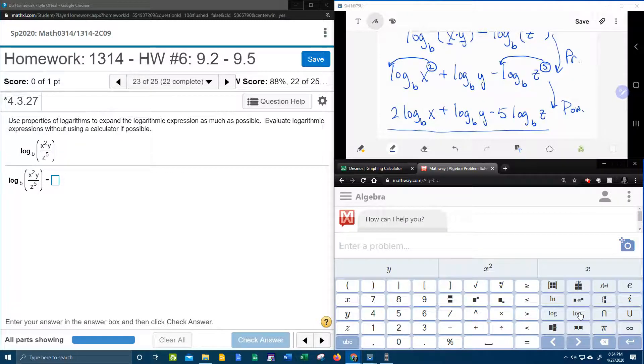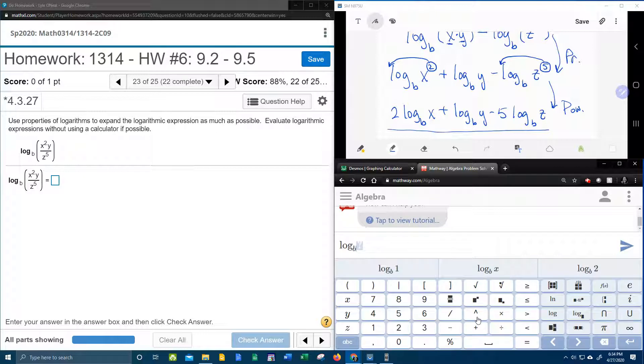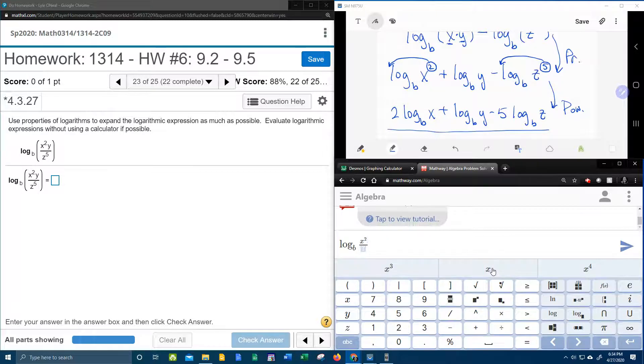Right here, log base b, and I'm going to move over and select the fraction, x squared y, x. And if you look up here, it has intuition. It's like thinking, okay, you're probably going to want one of these next. And that's right.